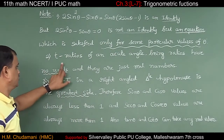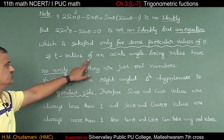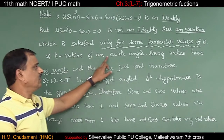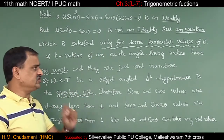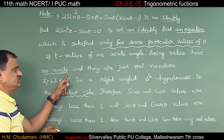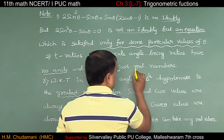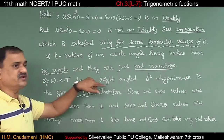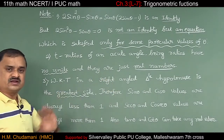Very important note. Second note: trigonometric ratios, or T-ratios, means trigonometric ratios of an acute angle. Being a ratio, they have no unit — no unit — and they are just a real number.